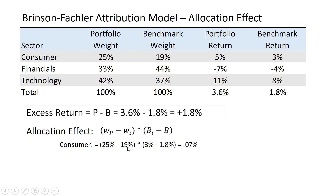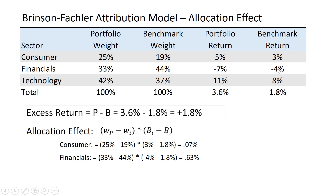25% minus 19% is 6%, times the difference of 1.2%, gives about 7 basis points of excess return — a good decision to allocate more capital to consumer stocks that month. For financials, we underweighted by 11% — 33% versus 44%. Good thing, because financials were down 4% and the market was up 1.8%. So minus 4% minus 1.8%, multiplied by minus 11%, gives 63 basis points of excess return. Very important to underweight financials in this particular month.